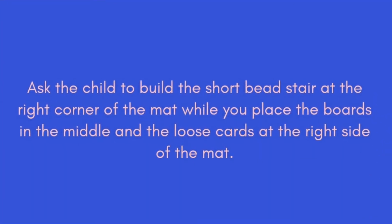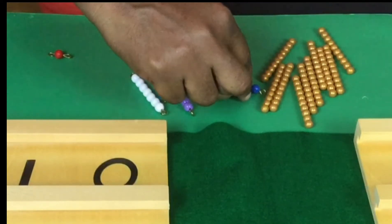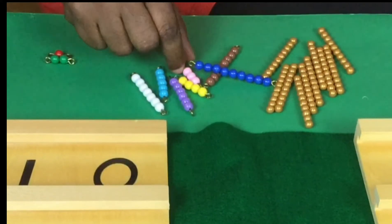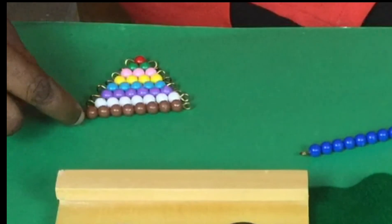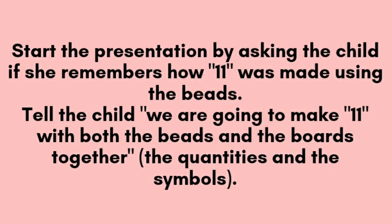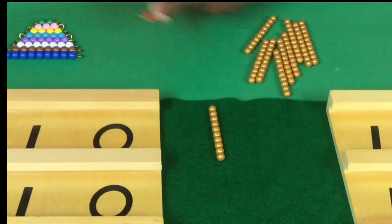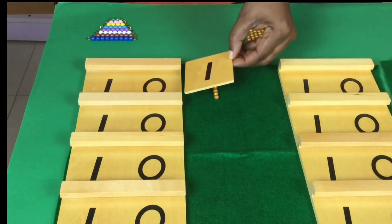Ask the child to build the short bead stair at the right corner of the mat, while you place the boards in the middle and the loose cards at the right side of the mat. Start the presentation by asking the child if she remembers how 11 was made using the beads. Tell the child, we are going to make 11 with both the beads and the symbols. Ten and one make 11.